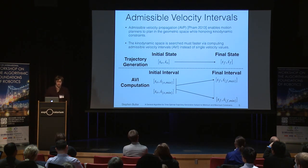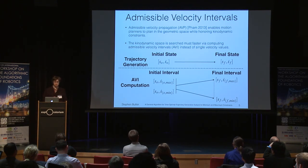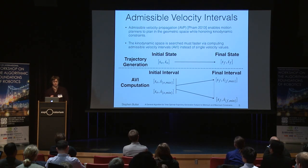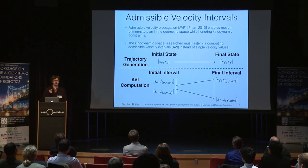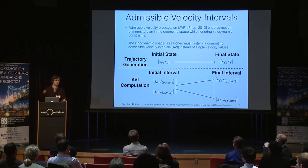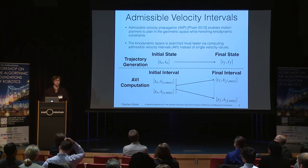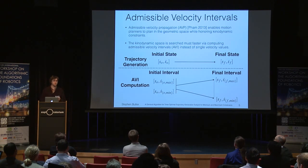Why would we want admissible velocity propagation? It's an interesting method that enables motion planners to plan in the geometric space while honoring kinodynamic constraints. The kinodynamic space can be searched much faster via these admissible velocity intervals, since rather than generating single points in the dynamic space, we're computing the entire velocity interval — giving us essentially a volume as opposed to a single value, and we can do this very cheaply.